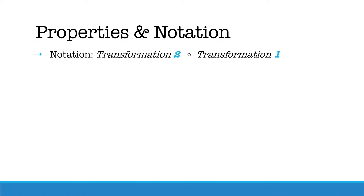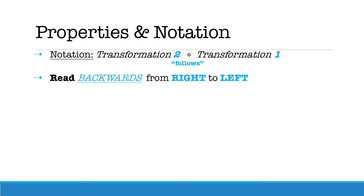When looking at compositions of transformations, mathematical notation is going to be read as transformation two follows transformation one. The circle that separates the two transformations is read as the word 'follows.' When performing a composition, we read it from right to left, so transformation one would be performed first and transformation two would be performed second.